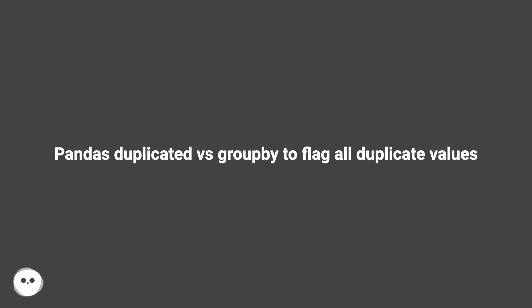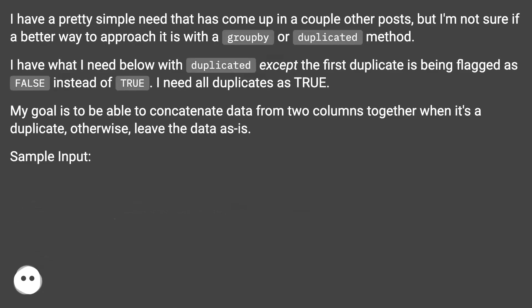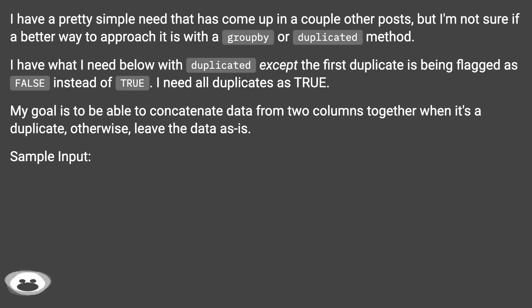Pandas duplicated versus groupby to flag all duplicate values. I have a pretty simple need that has come up in a couple other posts, but I'm not sure if a better way to approach it is with the groupby or duplicated method. I have what I need below with duplicated, except the first duplicate is being flagged as false instead of true. I need all duplicates as true.